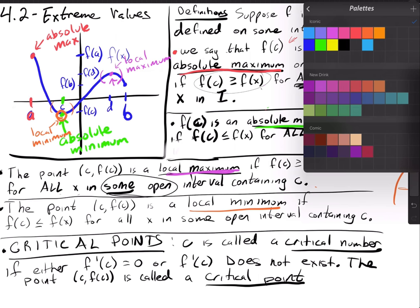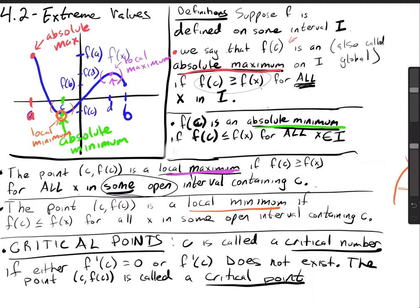Now this critical point business is a bit interesting. Critical number versus critical point — what's the difference? A critical number is just the x value and a critical point is the actual point with both x and y. The derivative equals zero is one condition for a critical point. Graphically, that means a flat spot — a horizontal tangent line.